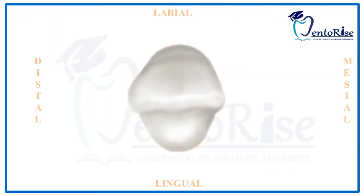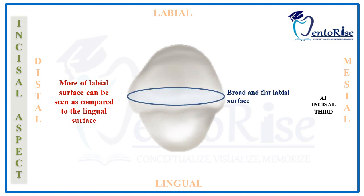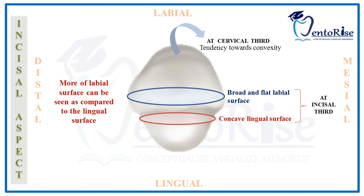Starting with the last aspect: the incisal aspect. The labial surface is more visible compared to the lingual surface. On the labial surface, specifically the incisal third of the crown, the surface is broad and flat; however, moving cervically on the labial surface there is a tendency towards convexity. On the lingual surface at the incisal third, the surface is concave, while in the cervical third a convexity of the cingulum is present.